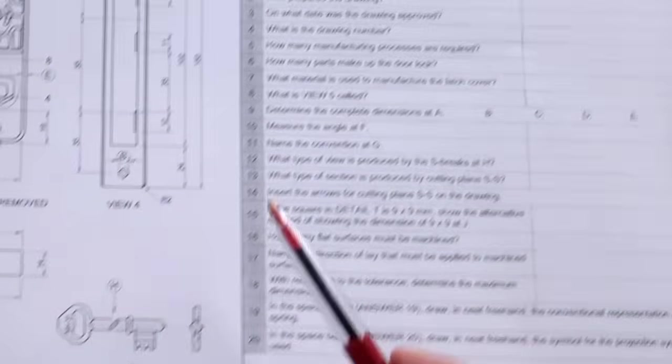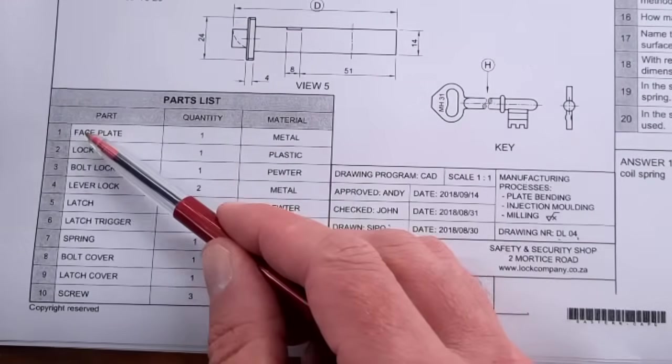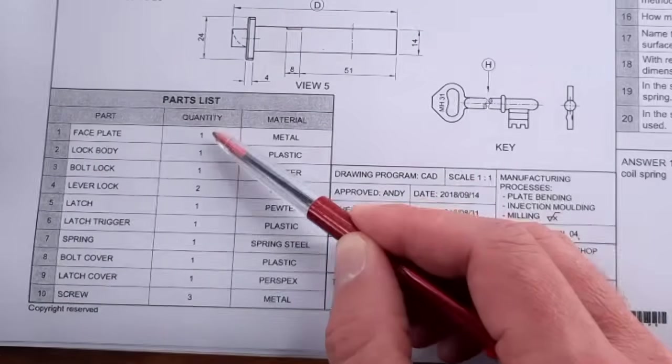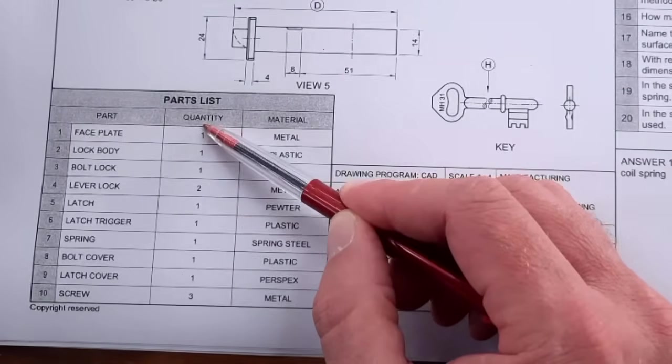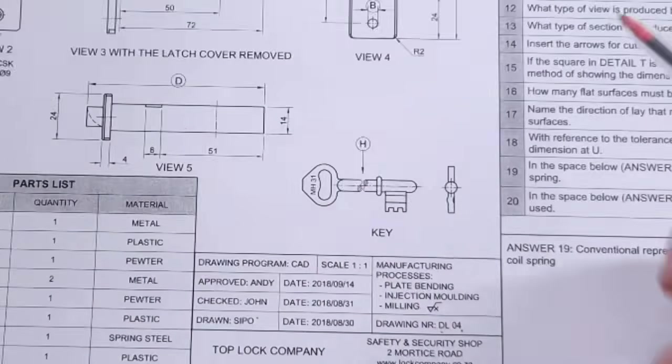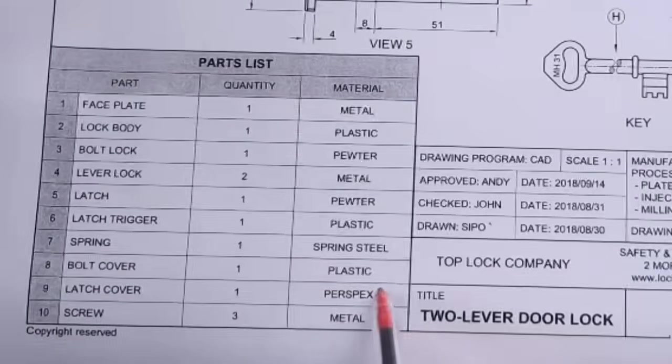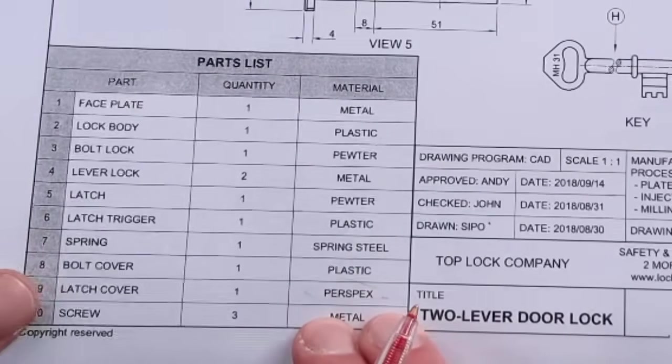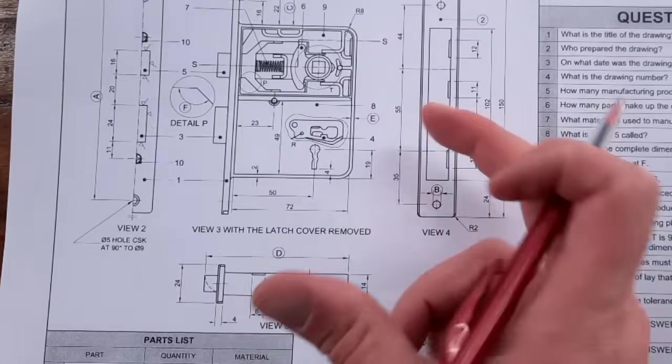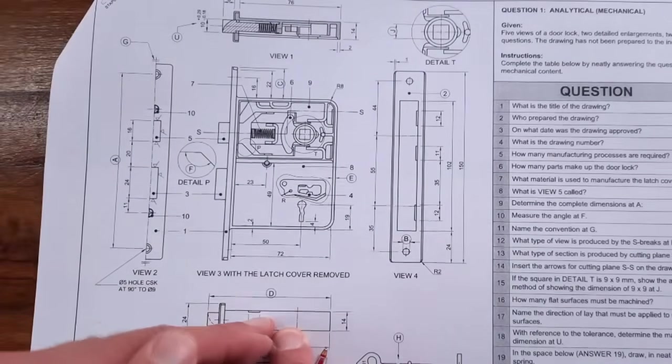How many parts make up the door lock? So that's the first time you're gonna have to think, and you're only at question number six. How many parts? Now if they asked how many different parts, you would have counted one to ten. But because they're saying how many parts, you have to go count the complete quantity and you end up with 13 parts. Make sure you read the questions to get understanding of what is required. What material is used for the latch cover? It's perspex - again, just reading and you're achieving. What is view five called? I said that in my introduction. It's a bit of critical thinking, but you can figure it out. This is the bottom view.